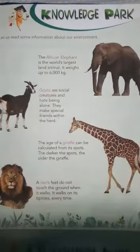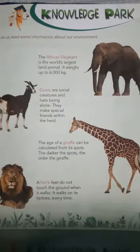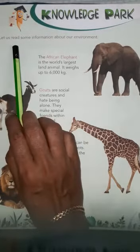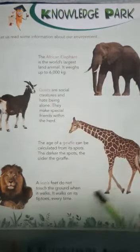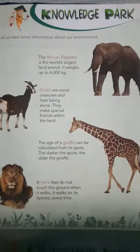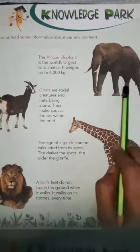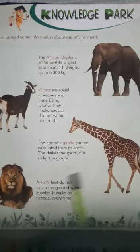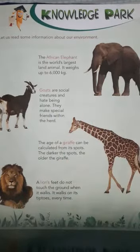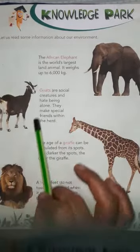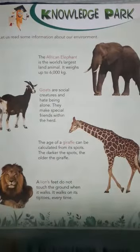In this page we have to read and understand some information about our environment. Some animals are here. So which animal is this? This is elephant. This is giraffe. And this is lion. And this is goat. These three animals — elephant, giraffe, and lion — are wild animals, and goat is a domestic animal.